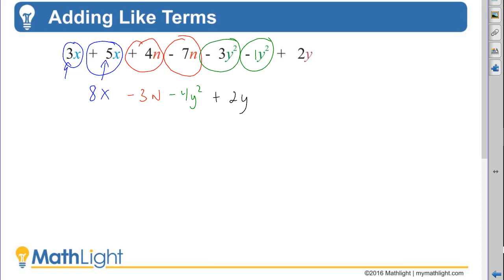Some would say that that's the solution, others would say you should rearrange them in alphabetical order going by the power. We'll deal with those topics a little bit later on in the year when we get more into binomials and trinomials and such. So, 8x minus 3n minus 4y squared plus 2y: adding of like terms.